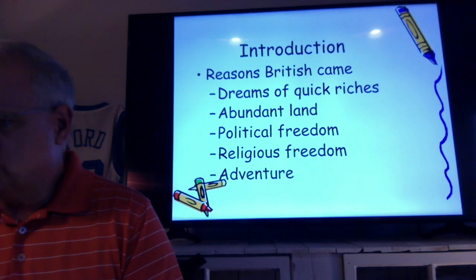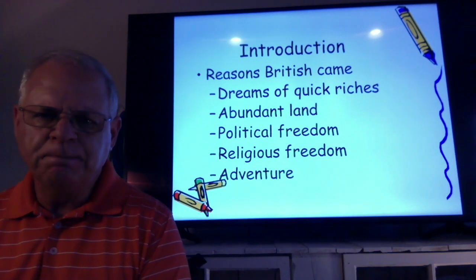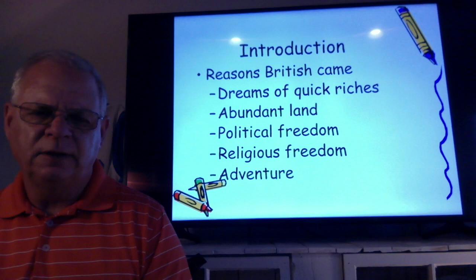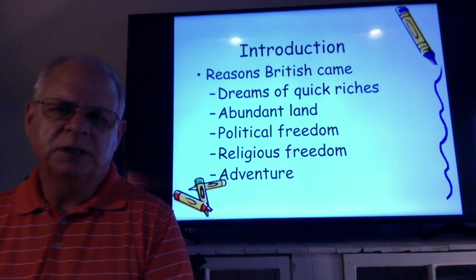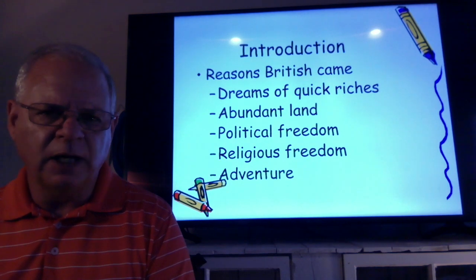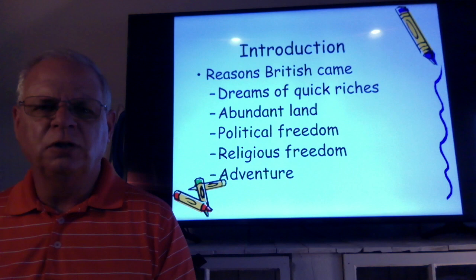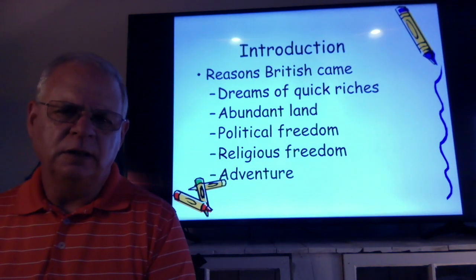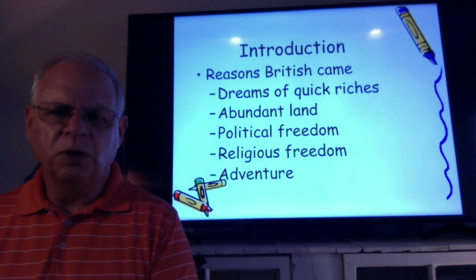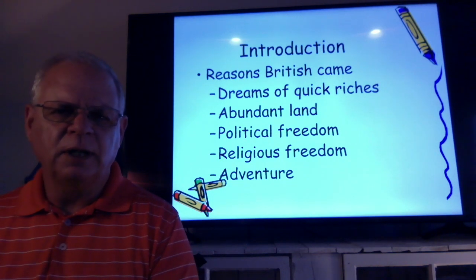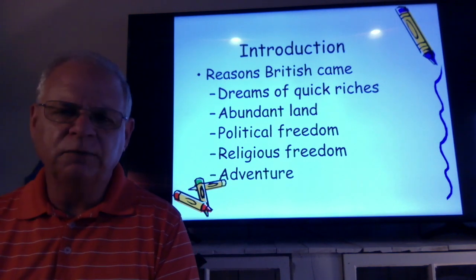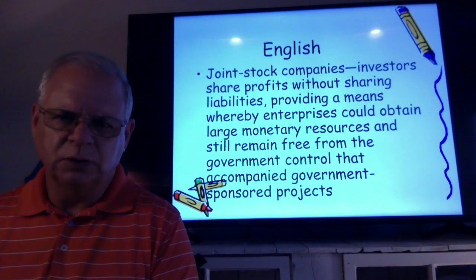From page 20, looking at the reasons the British came — scattered through the page — the first was dreams of quick riches: men who thought they'd get off the ship, walk on land, and pick up nuggets of gold. For some, it was abundant land; they could not own land in England, so they came to the New World to own property. Others sought political and religious freedom, disagreeing with England's system of nobility and the Church of England. And then there was adventure — though they found out pretty quickly it wasn't going to be that way.